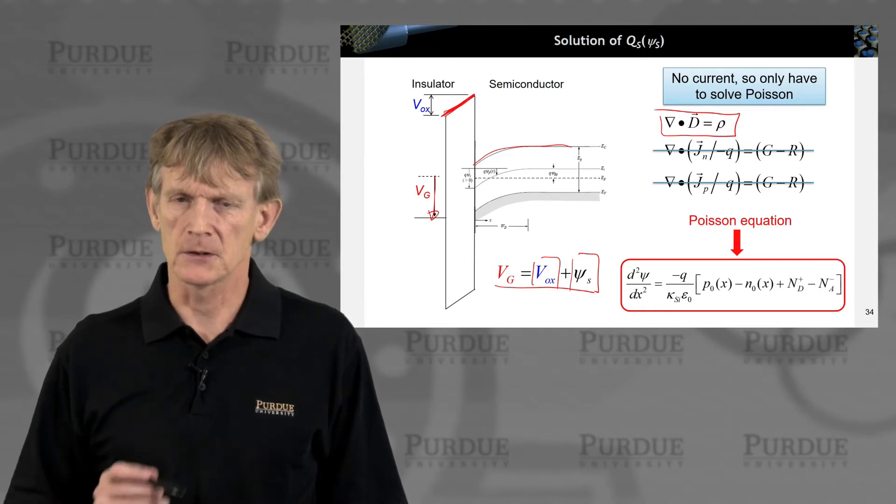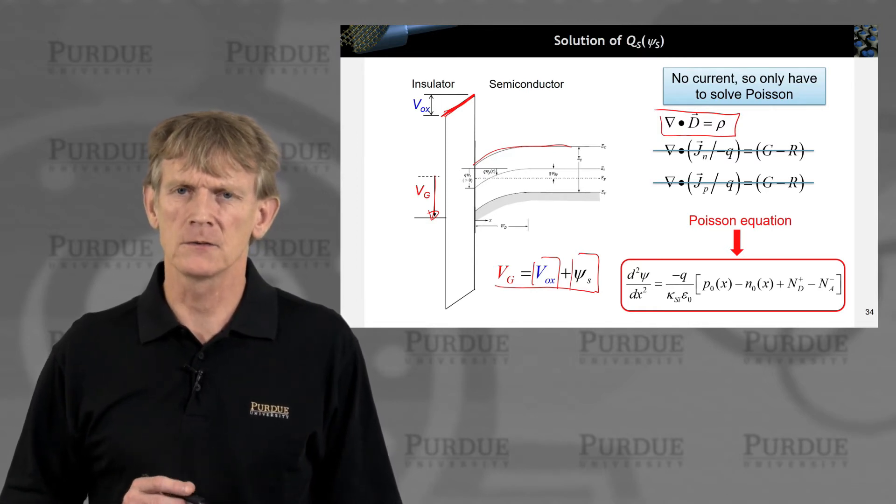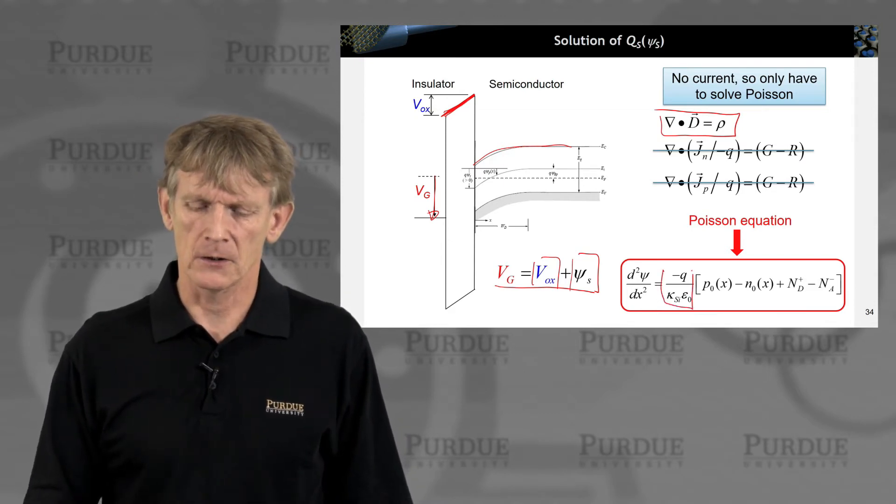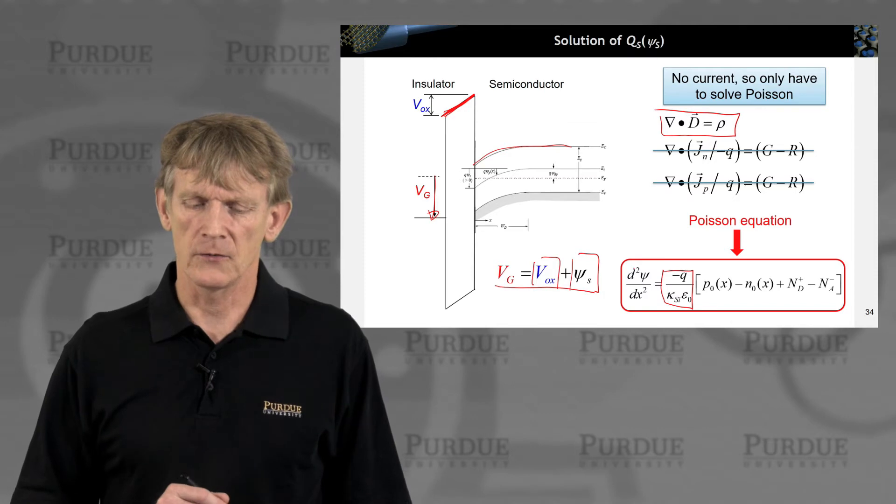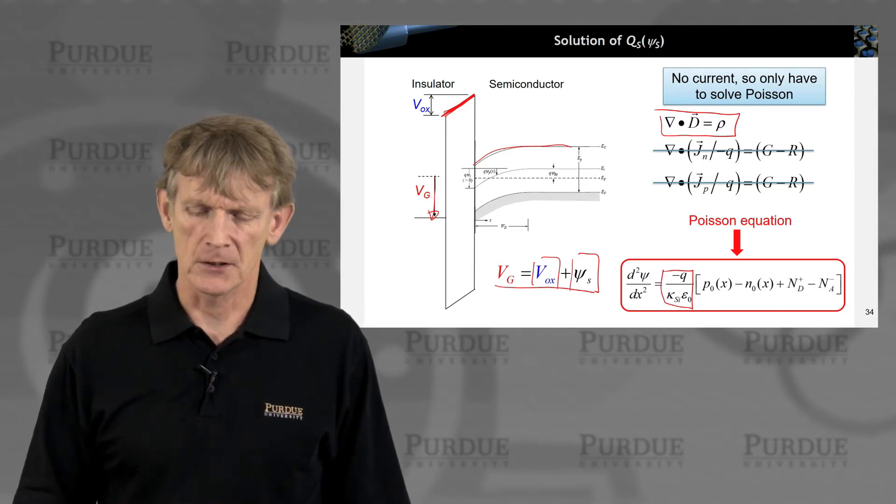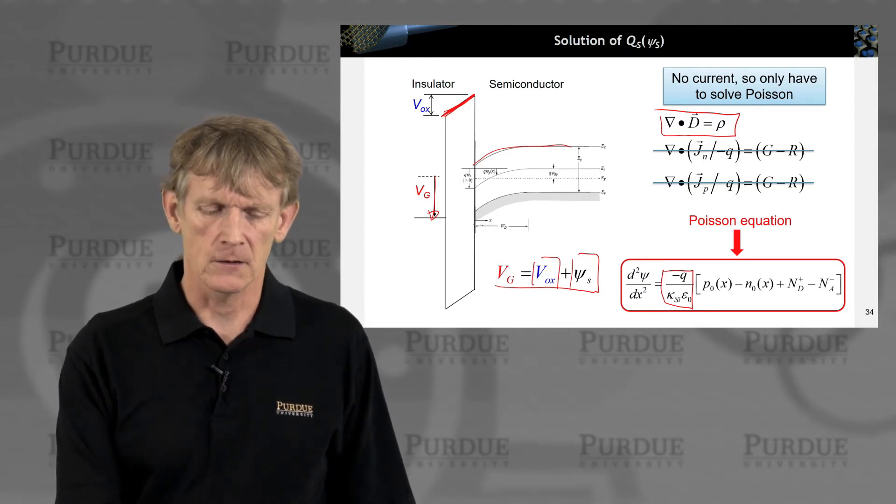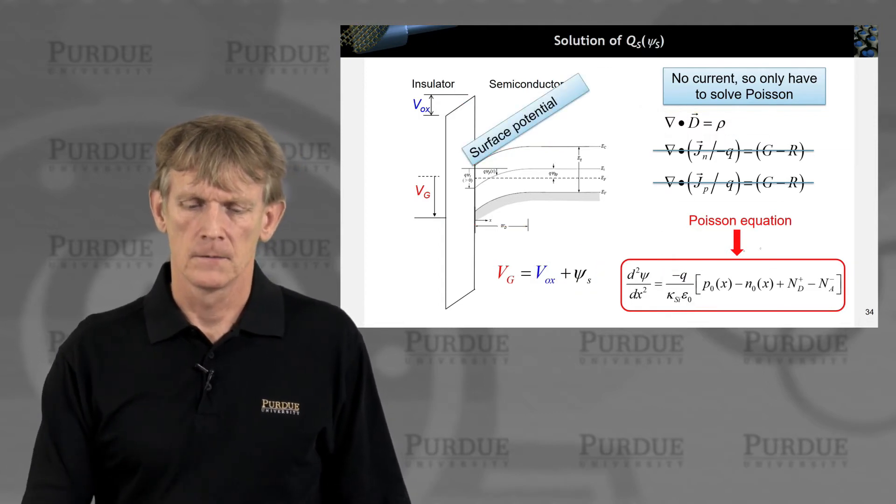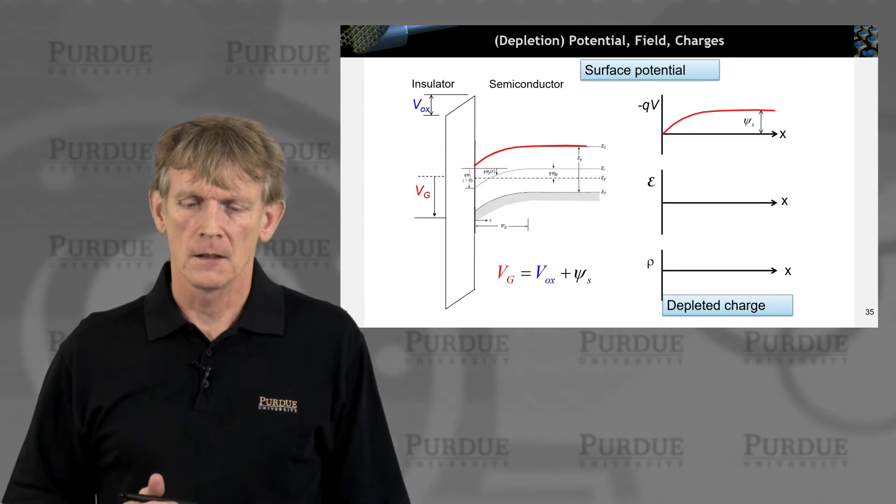How do we do that? Well, we need to add up the charges, holes, electrons, donors, and acceptors, and we have just one dielectric constant, and we solve for the potential along the x direction here, which we call x.